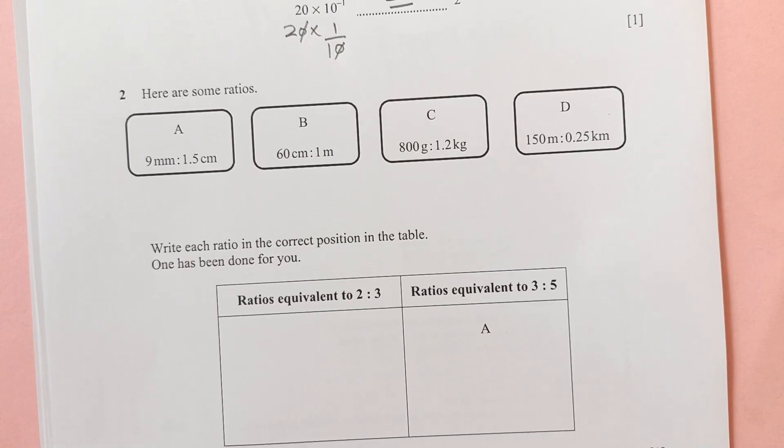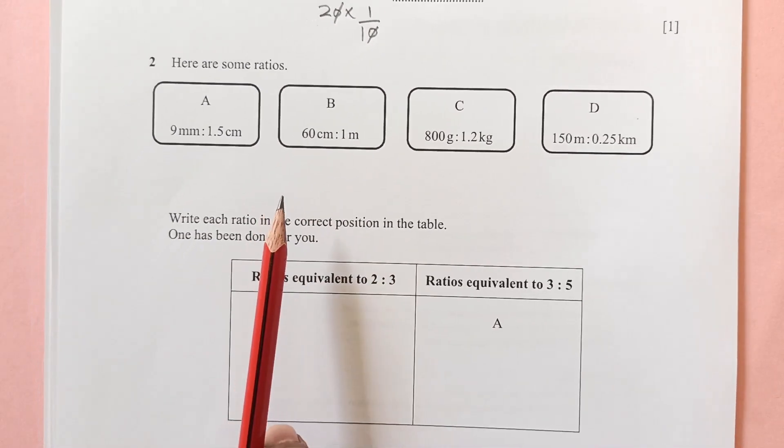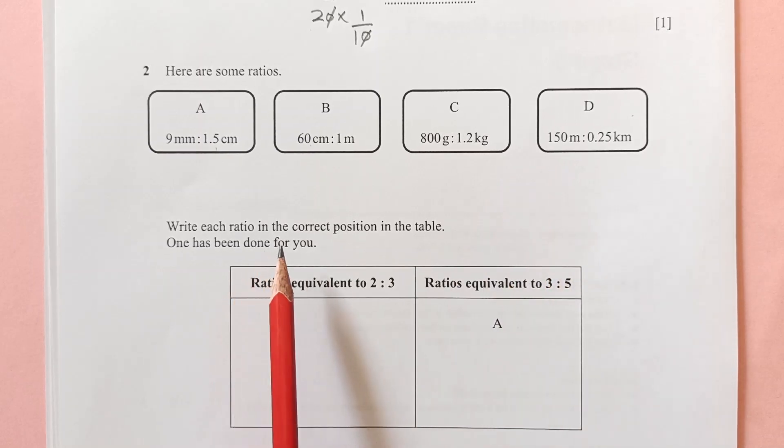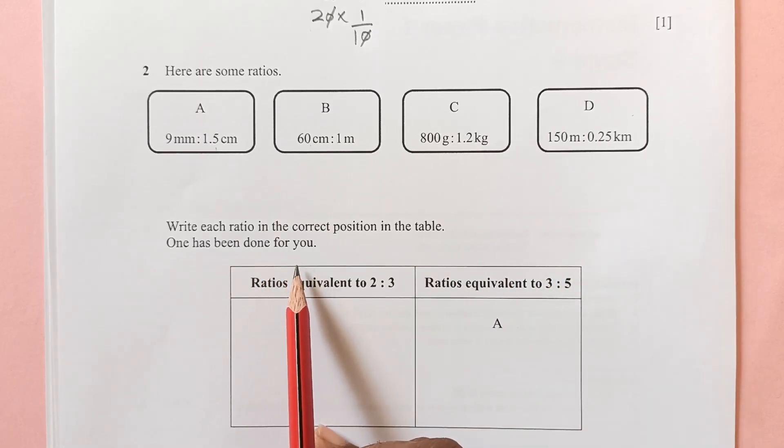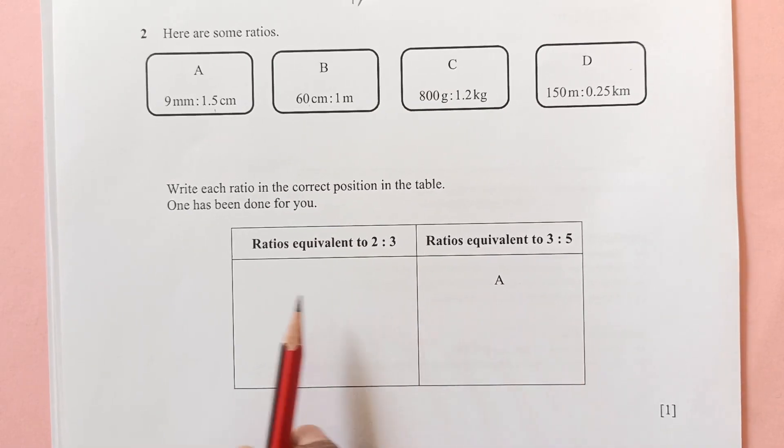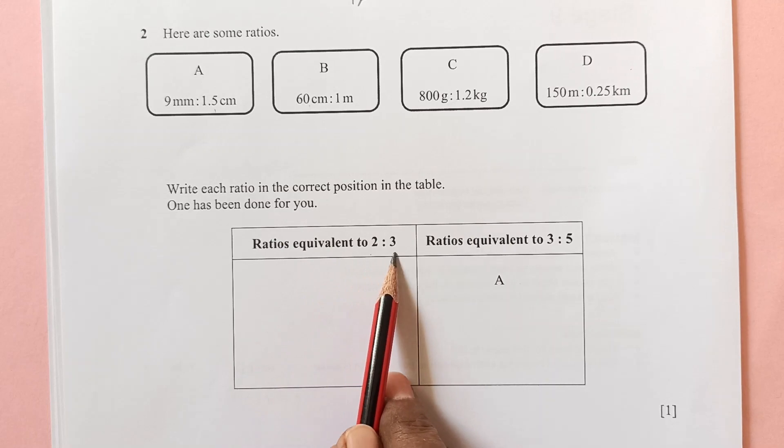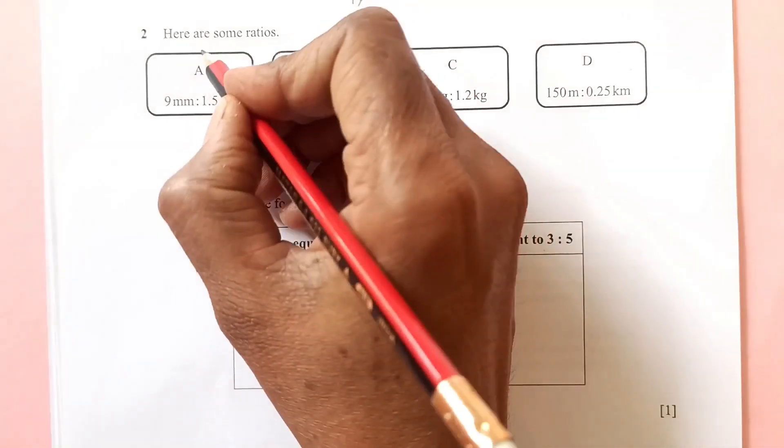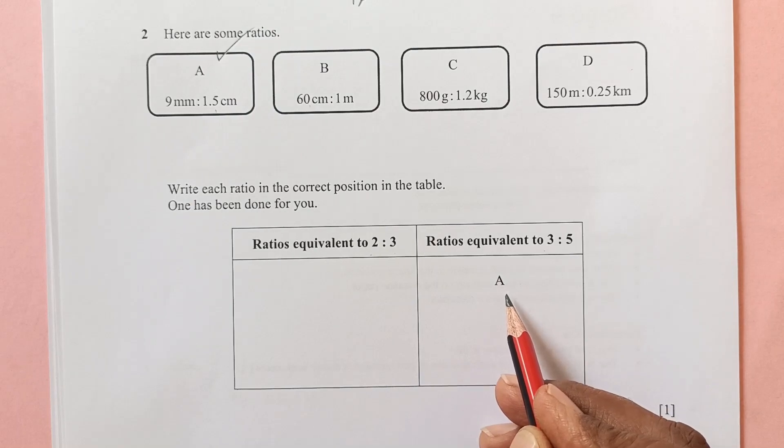Now number 2, here are some ratios. You can see we have ratios here A, B, C and D. Write each ratio in the correct position in the table. One has been done for you, we have A here. We need to see this ratio equivalent to 2:3 and this is 3:5. A is already done.